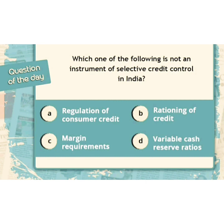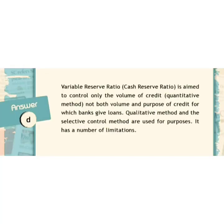The next question is: which one of the following is not an instrument of selective credit control in India? The right answer is option D.